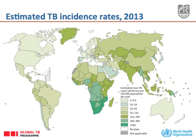The map shows the incidence rates per capita of tuberculosis in 2013. The darker green colors mean over 500 cases per 100,000 — for instance, in Southern Africa.